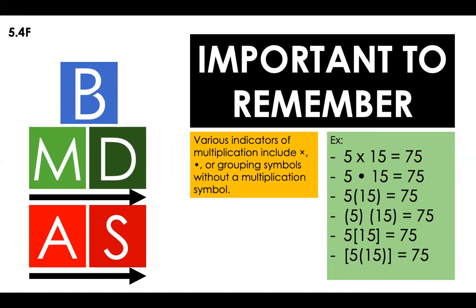Something important to remember is that there are various indicators of multiplication in expressions. The most common one, the one that we know, is the x. 5 times 15 is equal to 75. Also, 5·15 is equal to 75, that's the same as 5 times 15. 5 parenthesis 15 is equal to 75. 5 in a parenthesis without any symbol and then a 15 in a parenthesis, you are doing 5 times 15, that's 75.